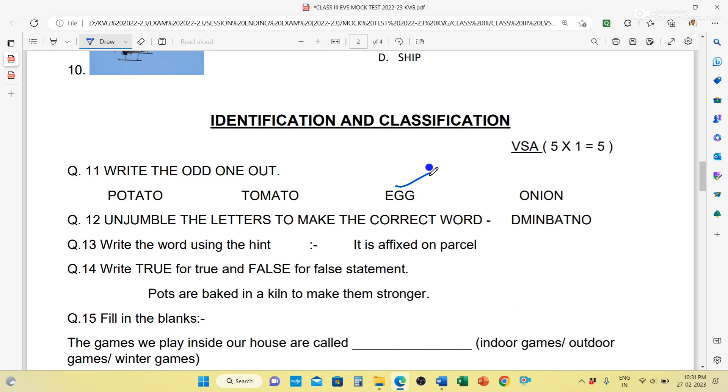Next, unjumble the letters to make the correct word: D-M-I-N-B-A-D-N-O. You can unjumble the word. You can make badminton. B-A-D-M-I-N-T-O-N. Badminton is a name of a game.